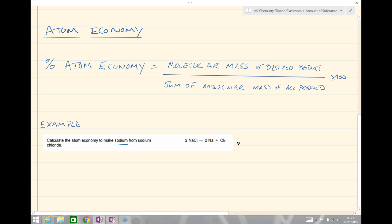Well, first of all, we've got to decide what is the desired product. And in this case, it's the sodium. So our MR of sodium for our equation down here is going to be percentage atom economy equal to the mass of the desired product, the total MR.